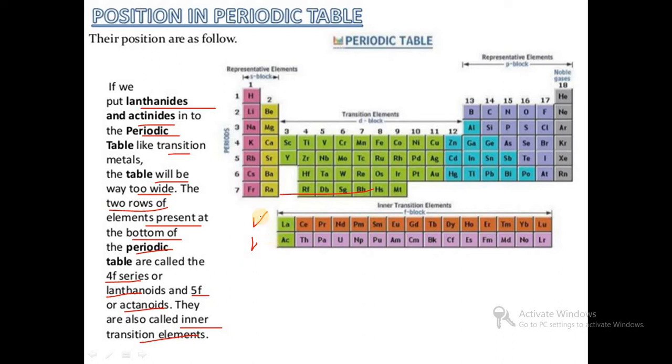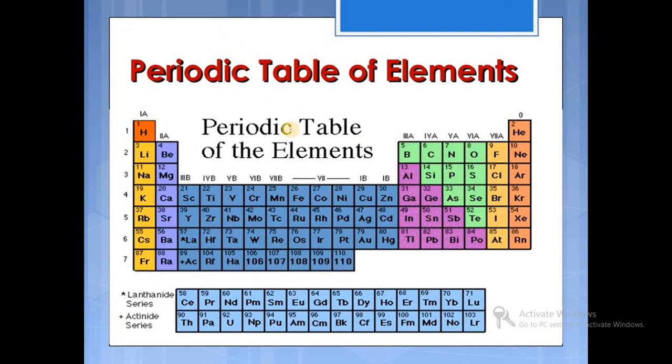For actinide series, the actinide series occurs at the 7th period and group number 3.